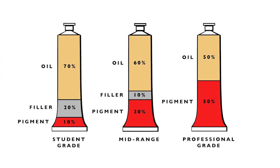The first thing you need to know about oil paint is that it comes in three different grades: student grade, mid-range artist grade, and top quality professional grade. What determines the quality of these different grades is the amount of pigment they each contain.